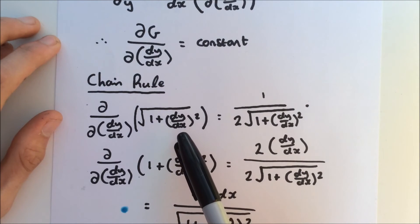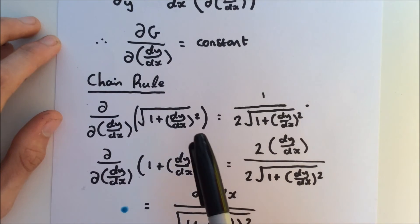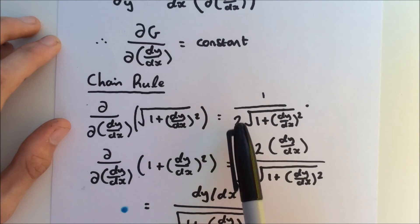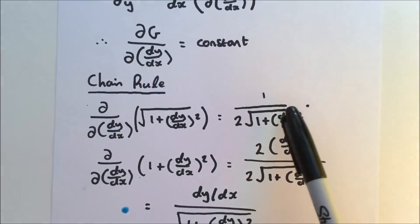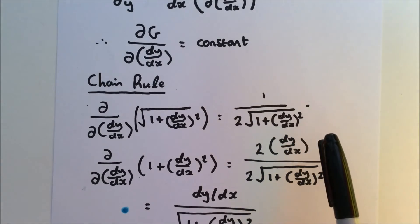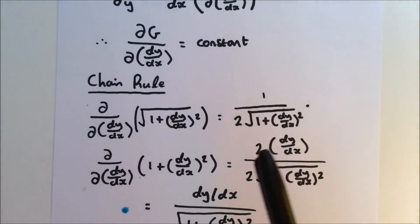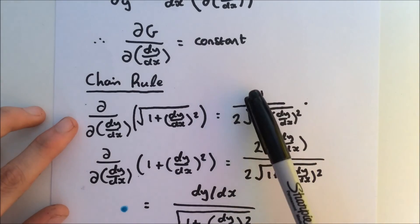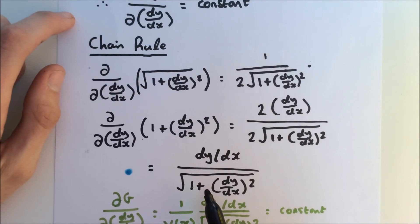We bring the 2 down, minus 1, which is of course negative, so we're going to get 1 over 2 times the square root of 1 plus dy/dx squared. But now we need to differentiate the inside, which is 1 plus dy/dx squared with respect to dy/dx. This gives us 2 dy/dx. This multiplied by this will give us the overall derivative.